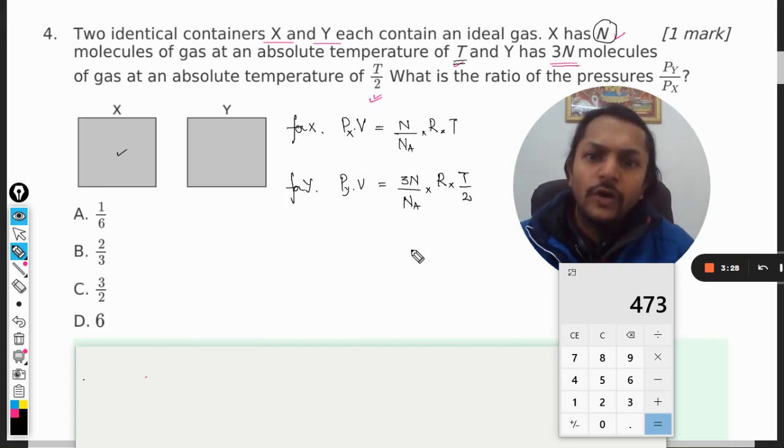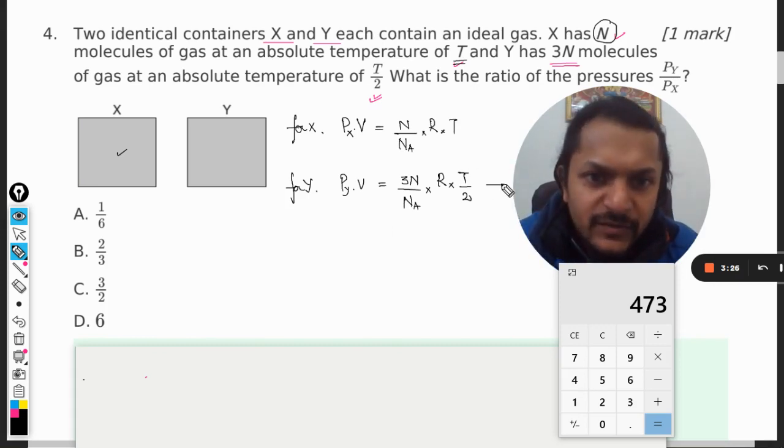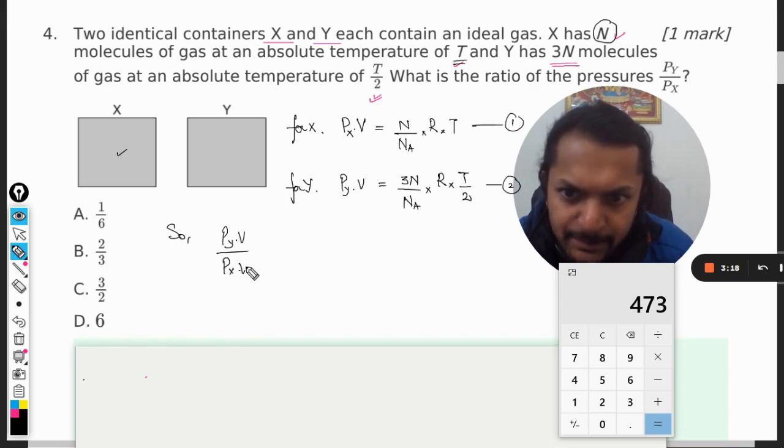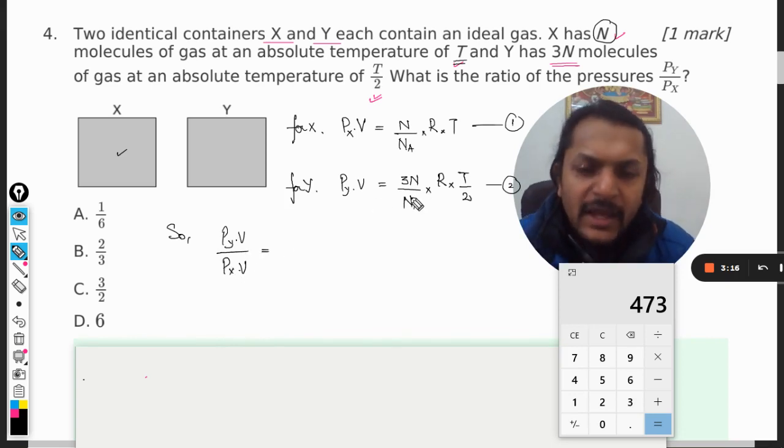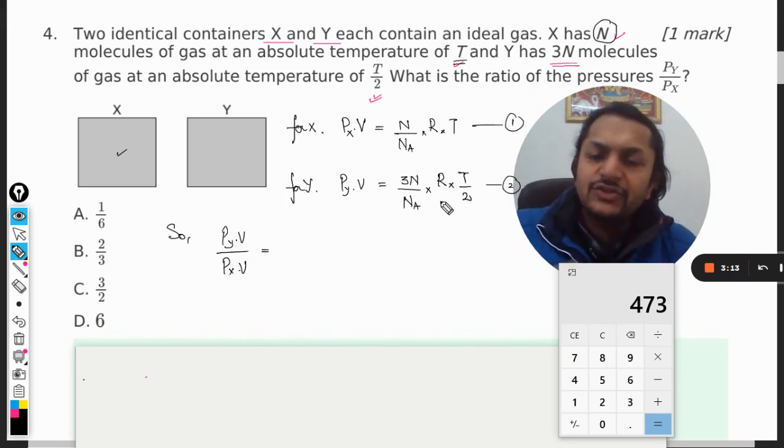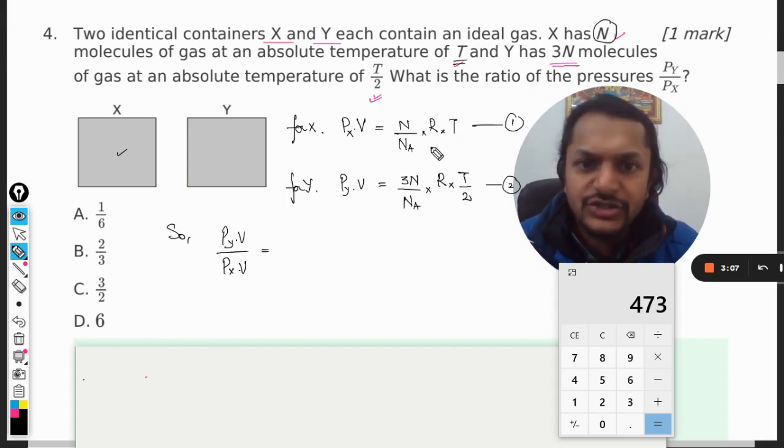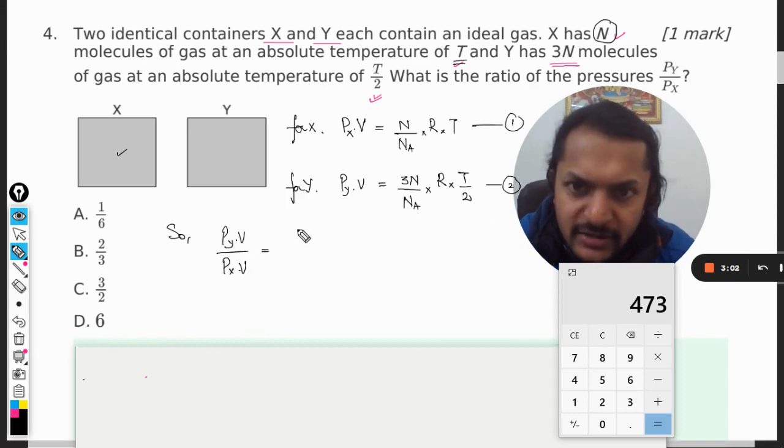Now we need to find the ratio of Py by Px, so it means we have to divide the equation number 2 by equation number 1. So Py into V divided by Px into V. And we can just divide these two equations by writing, if you face any problem with mathematics, what you can do is you can find a constant term and you can replace it later.